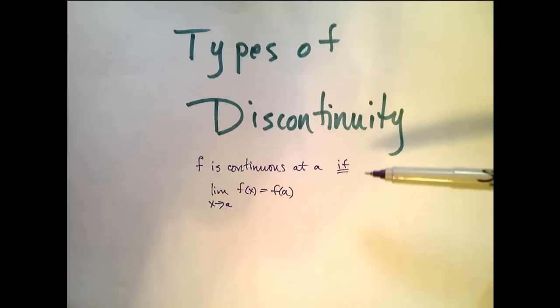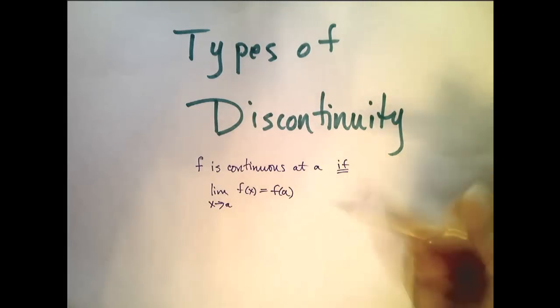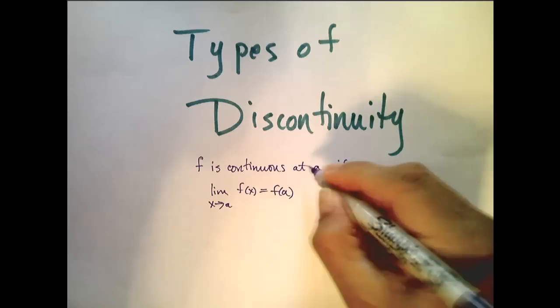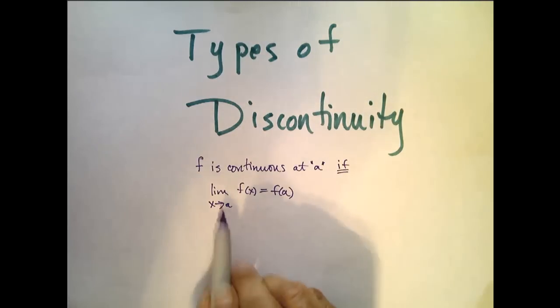So remember, f is continuous at a number a if the limit as x approaches a of f(x) equals f(a).